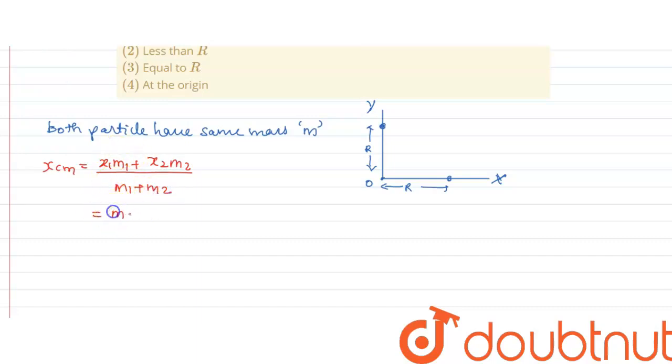So, the m₁ is M, and x₁ is R, for x₂ it is M, and the distance is 0, upon 2M. So, x center of mass will be R by 2.